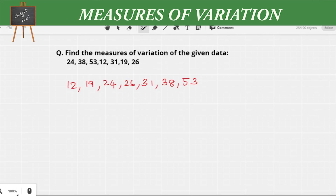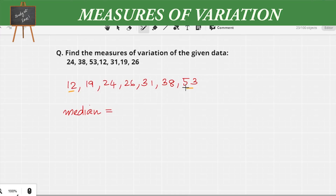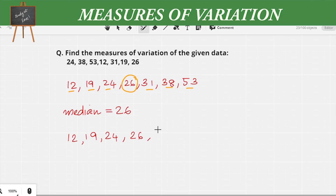After arranging the numbers in ascending order, we are going to find the median. One way to do it is to start marking numbers from the two ends, and as we reach the center we find the median. In this case, the number 26 is in the middle, so the median of this data set is 26.